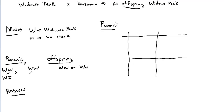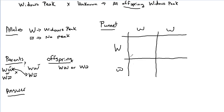Another possibility is that the second parent could be heterozygous. Let's check that by plugging into a Punnett square: WW crossed with Ww. Every resulting offspring is definitely widow's peak — all four squares show the widow's peak trait. So that combination works as well.